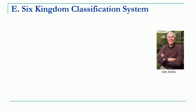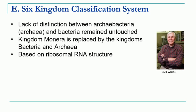The next system of classification was the six-kingdom classification system. It was proposed by Carl Woese in the year 1980. Around that period there was emphasis on phylogenetic relationship and redefining the kingdoms to be monophyletic. Carl Woese was a professor in the Department of Microbiology, University of Illinois, and he came up with this six-kingdom classification system in 1990. All this work was based on RNA studies.